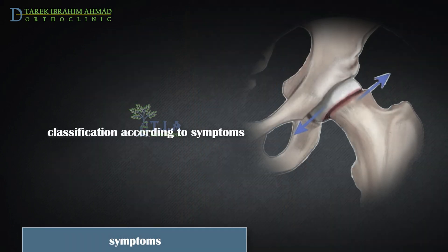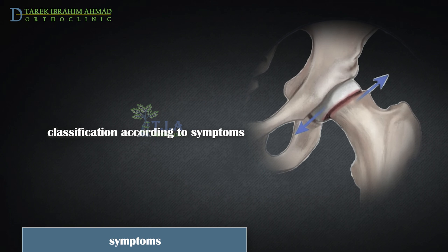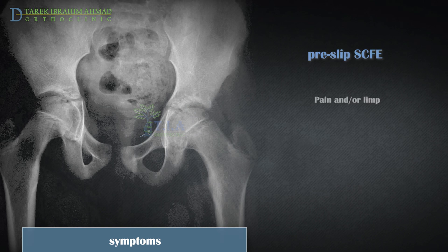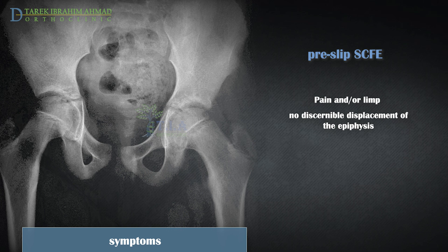SCFE is traditionally classified into four patterns of presentation on the basis of intensity and duration of symptoms. Pre-slip: children with pre-slip have pain but no discernible displacement of the epiphysis. The patient may also present a slight or mild limp. Radiographs demonstrate widening of the proximal femoral physis compared with the opposite asymptomatic hip.